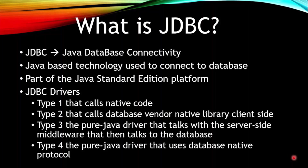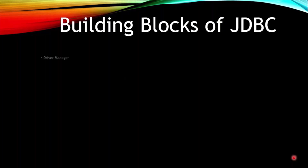Java Database Connectivity consists of various drivers. There are mainly four types. The first is Type 1 driver, which calls the native code of the locally available ODBC driver. The Type 2 driver calls the database vendor's native libraries to connect. The Type 3 drivers are purely Java-based drivers that talk with some middleware, which then talks to the database. The Type 4 drivers are totally pure Java drivers that directly connect to the database's native protocols.